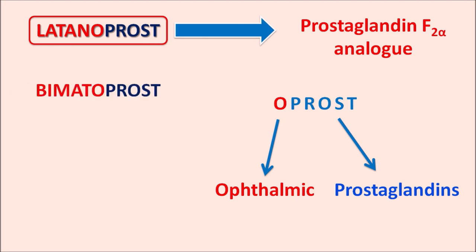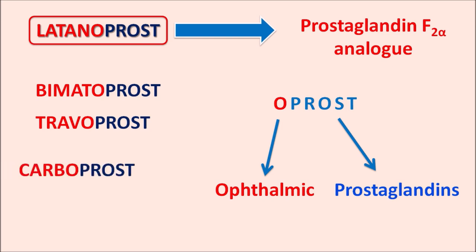We have similar drugs with the same suffix, such as bimatoprost and travoprost — all used for ophthalmic purposes. However, carboprost, even though it also has the suffix '-oprost', is not used for ophthalmic purpose; it is used to prevent postpartum hemorrhage. With the exception of carboprost, latanoprost, bimatoprost, and travoprost are all ophthalmic prostaglandins used in the treatment of glaucoma.